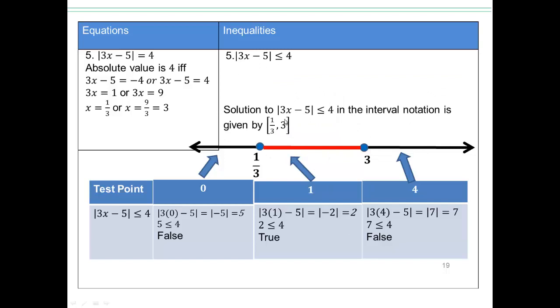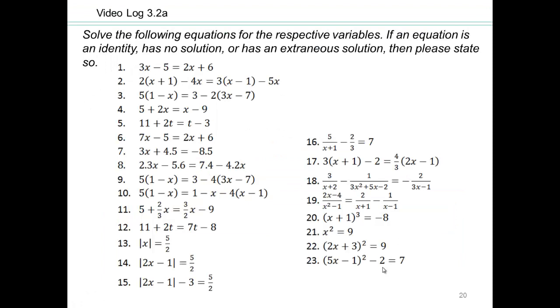So, interval notation would be square bracket 1 third, comma 3 square bracket. Square bracket, because 1 third and 3 are included. Try these on your own.